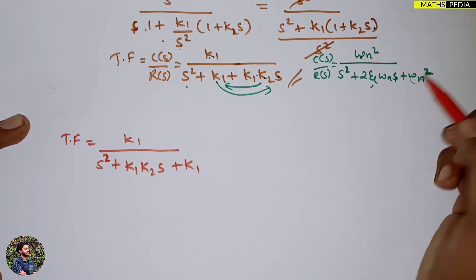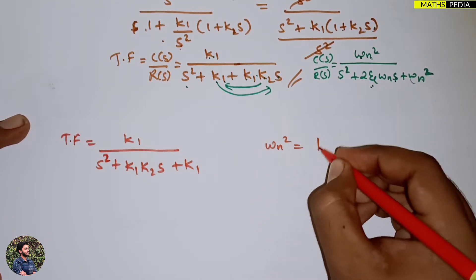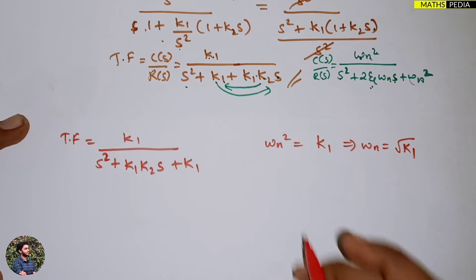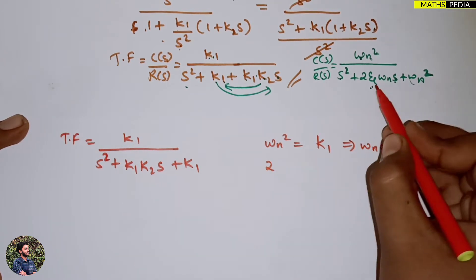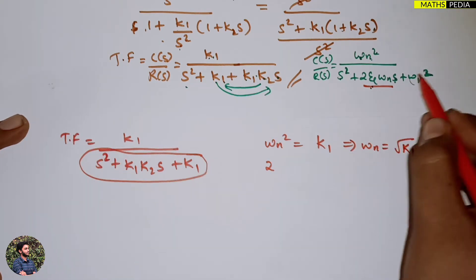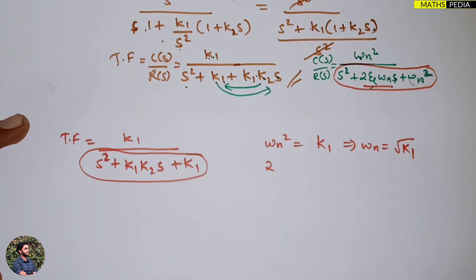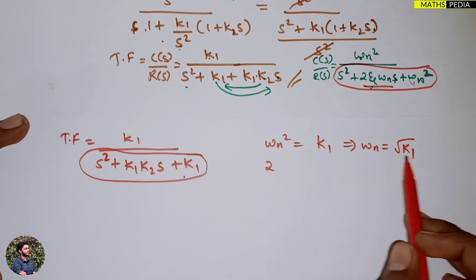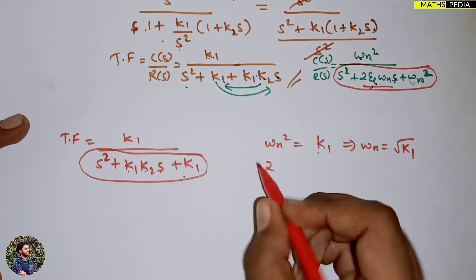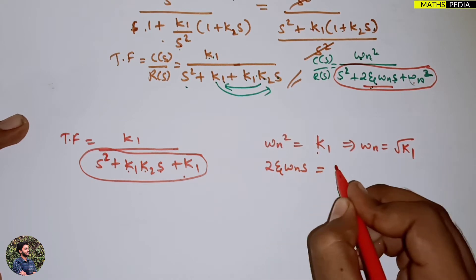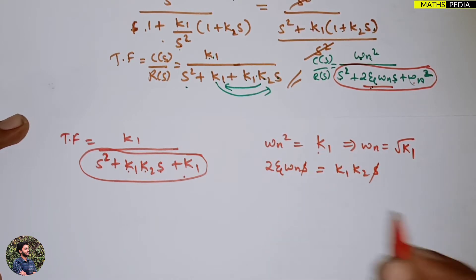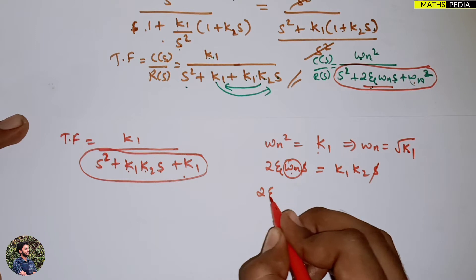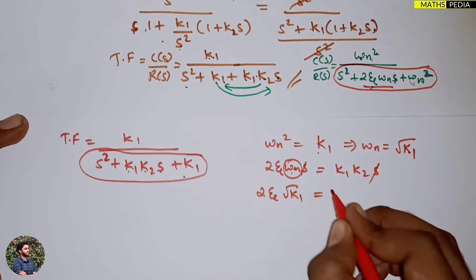Comparing the denominators: ωn² equals k1, so ωn equals √k1. Comparing the middle terms, k1·k2·s corresponds to 2ζωn·s, giving the equation 2ζ·√k1 equals k1·k2.